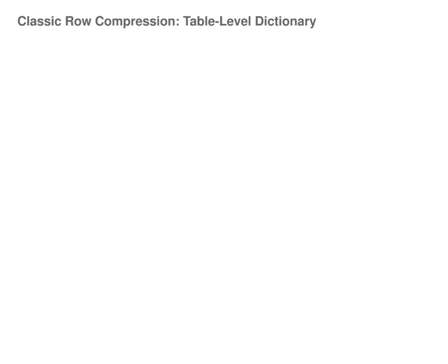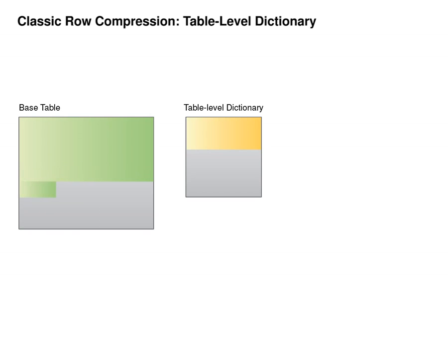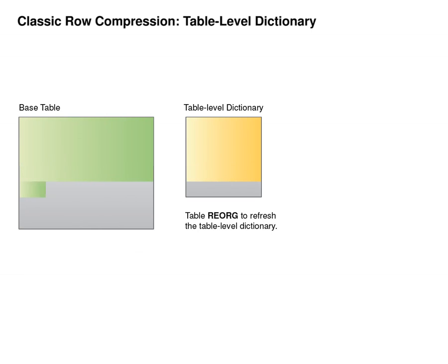In previous versions of DB2, what we will call classic row compression provided compression capabilities using a table-level dictionary. With this type of compression, after the initial compression dictionary is created, an offline table reorg operation is recommended as more data is added to the table. The reorg operation would update the table-level dictionary to maintain the optimal compression ratio.